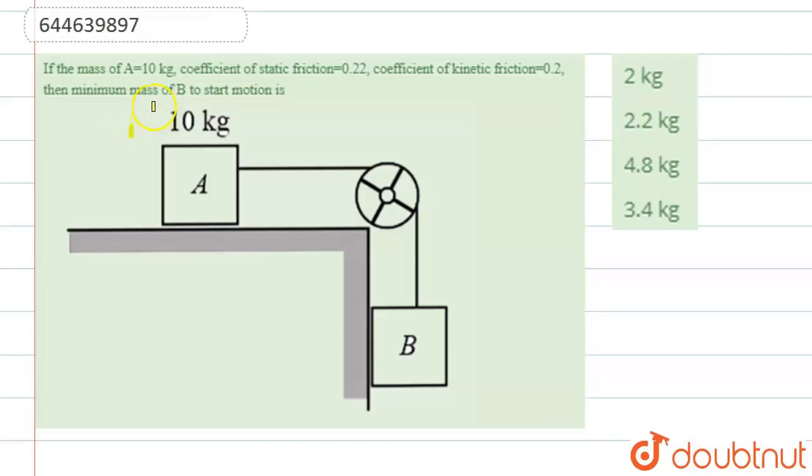Hello students, now we're going to see this question. The question says that if mass A equals 10 kilograms, coefficient of static friction is 0.22, and coefficient of kinetic friction is 0.2, the minimum mass of B to start the motion is...